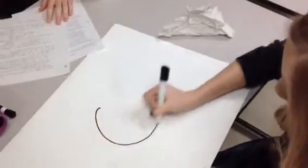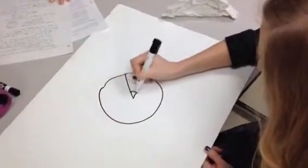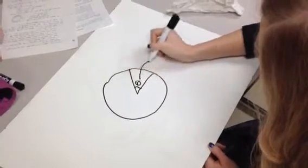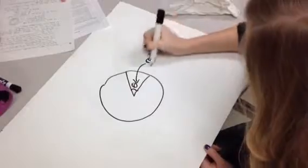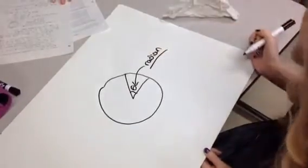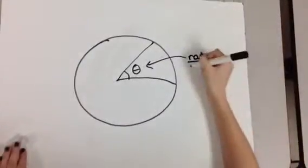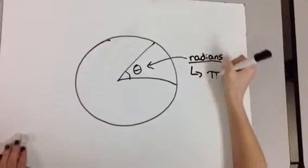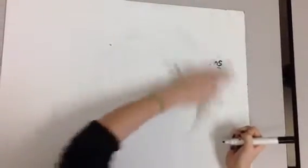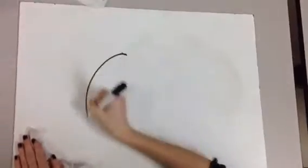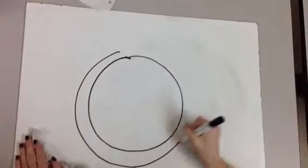A radian is the angle that you get when the arc length equals the radius. Radians are written in terms of pi. For example, there are two pi radians in one complete circle.